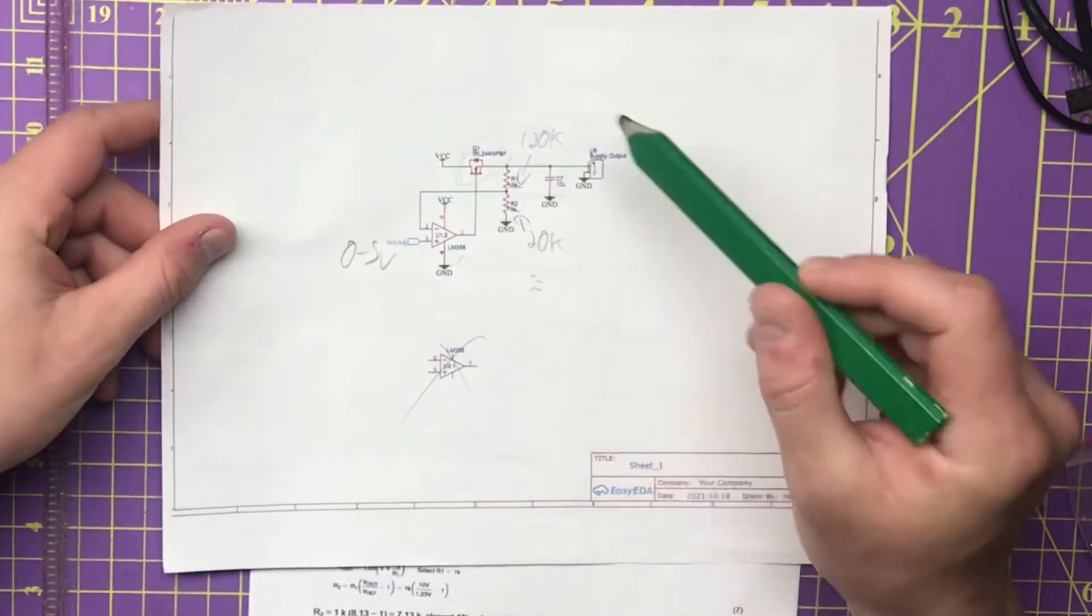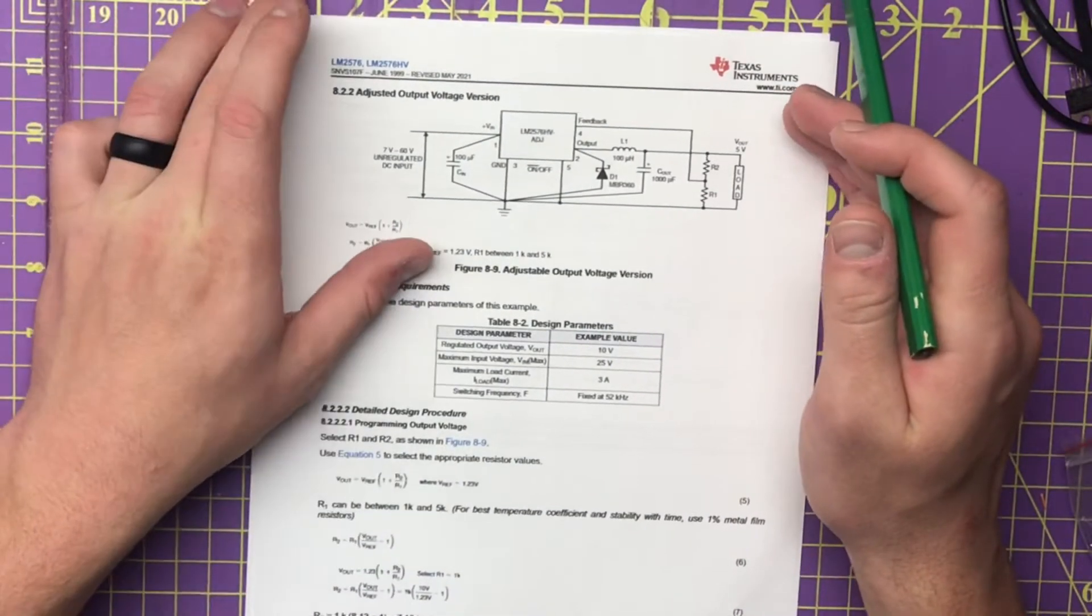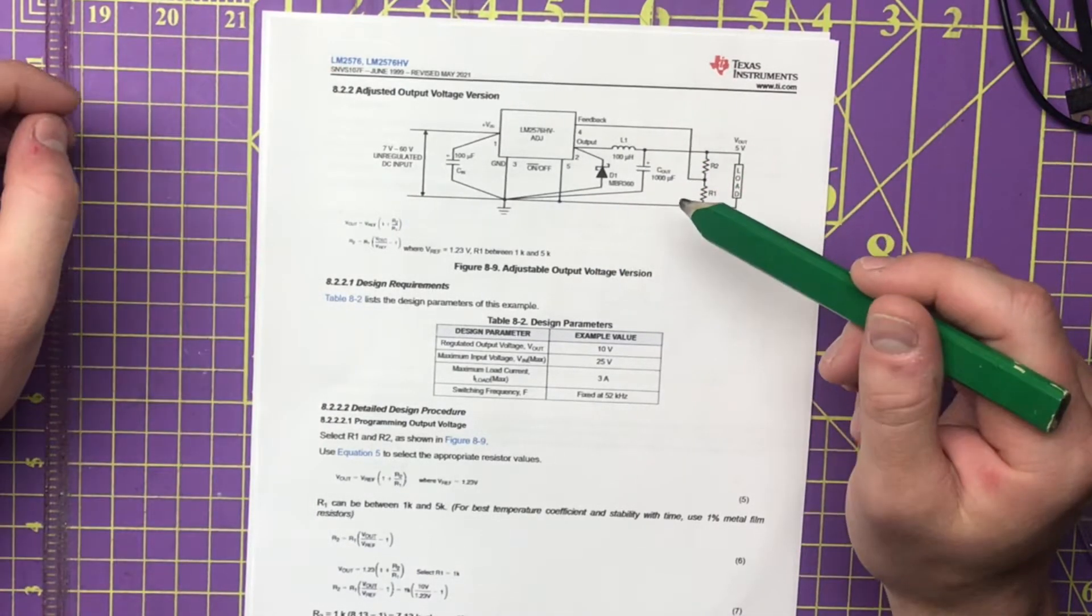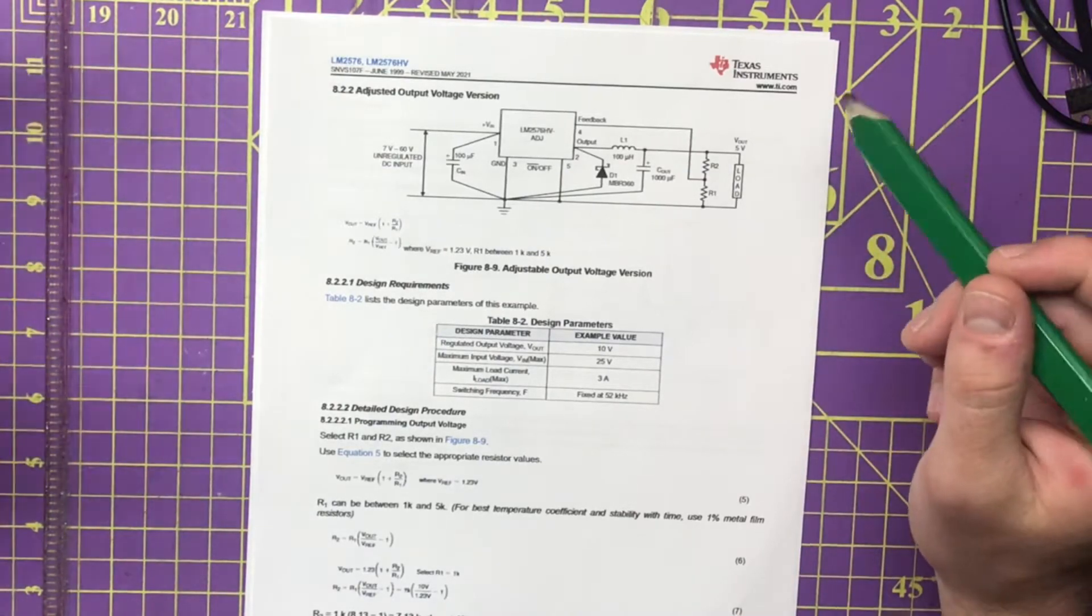Go back and watch the first one if you want to learn more about that. Number two, we're going to make a tracking pre-regulator for this guy. You're going to put lipstick on that pig just because we want to learn something.